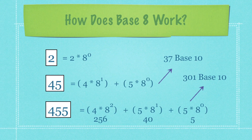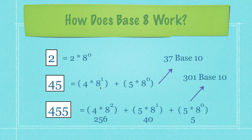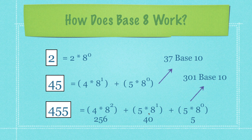How does base 8 work? Pretty much exactly the same way. The only difference is we use an 8 instead of a 10 or a 2. If we have 45 as a base 8 number, how does that translate into 37 in base 10? We calculate how many 8's we need to get to 37: 4 times 8 is 32, then we add 5 to get to 37 — that's exactly what we did. Similarly, for 301 in base 10 as base 8: how many 64's do we need? Multiply by 4 to get 256. Then how many 8's? Multiply by 5 to get 40. Adding up gives us a base 8 number of 455, compared to base 10's 301.